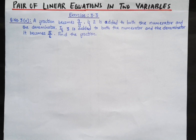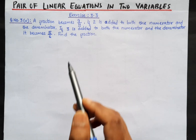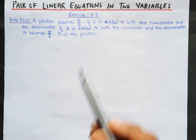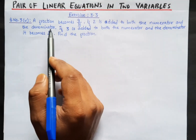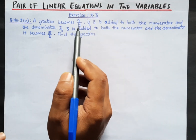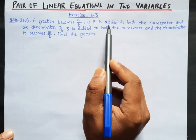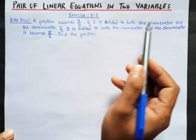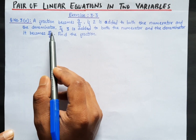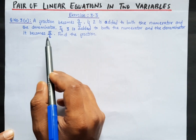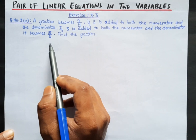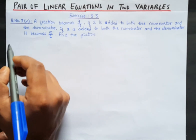Hello, my dear children, welcome to our math class. In this class we are going to solve question number five of the word problems from exercise 3.3. The first question: a fraction becomes 9 by 11 if 2 is added to both the numerator and the denominator. If 3 is added to both the numerator and denominator it becomes 5 by 6. Find the fraction.